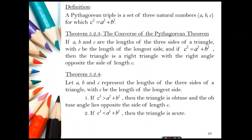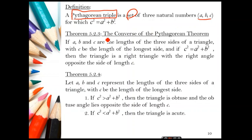Next we have the Pythagorean triple. A Pythagorean triple is a set of three natural numbers A, B, and C for which C squared equals A squared plus B squared. Since C squared equals A squared plus B squared is stated in the Pythagorean theorem, we call numbers A, B, and C a Pythagorean triple.